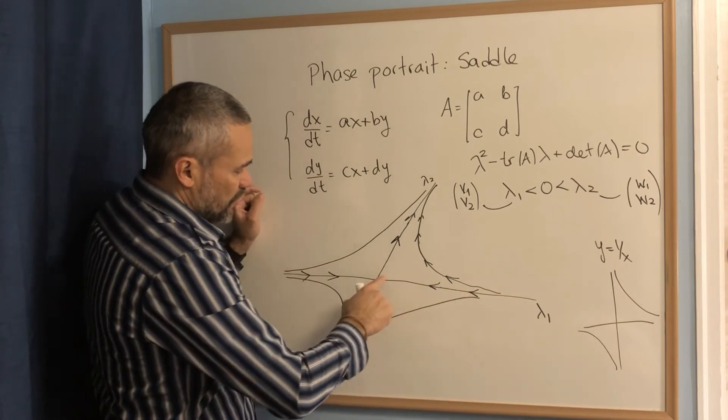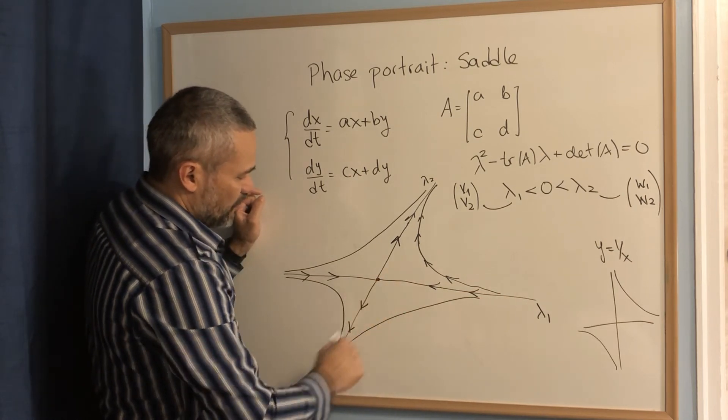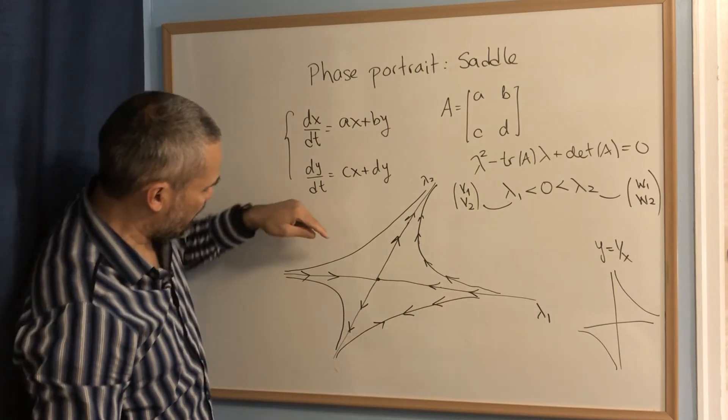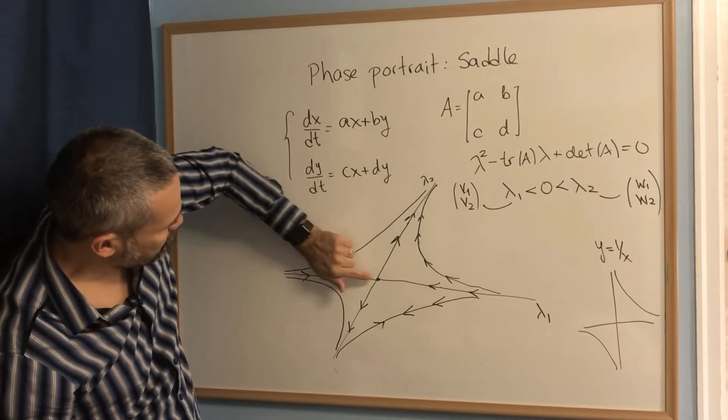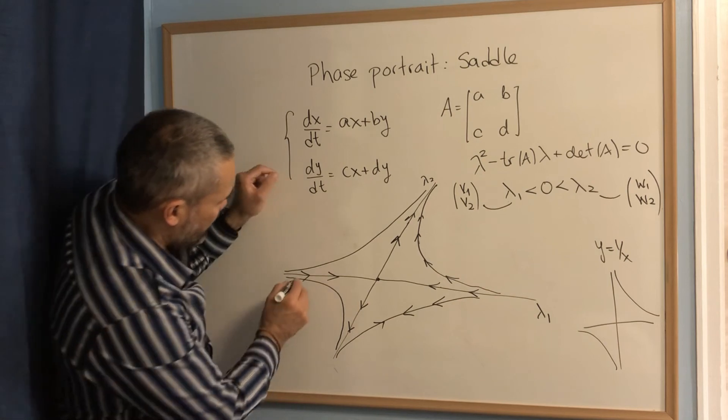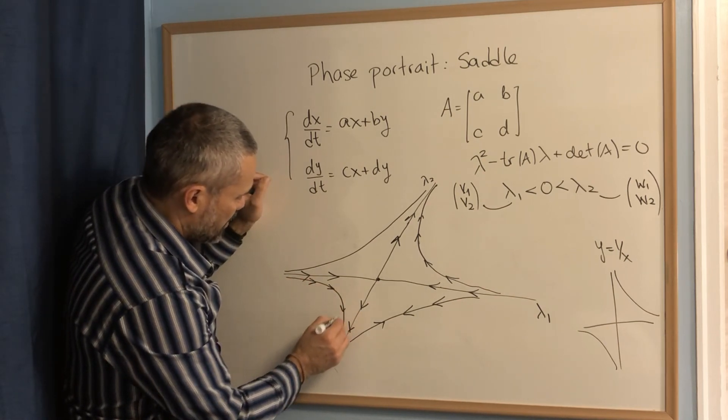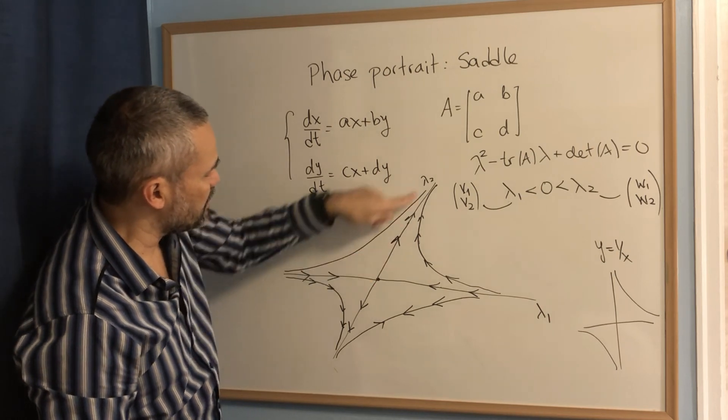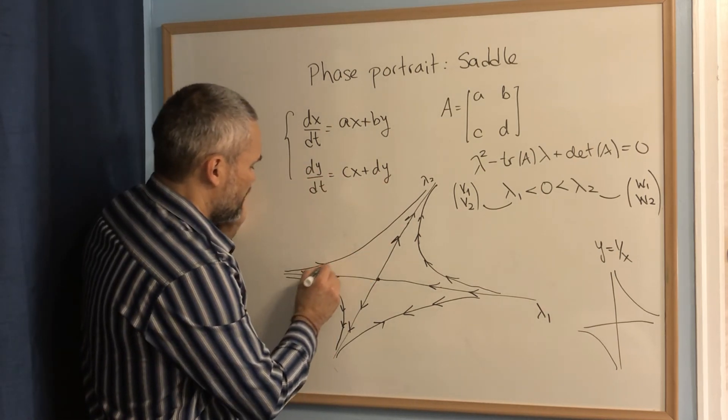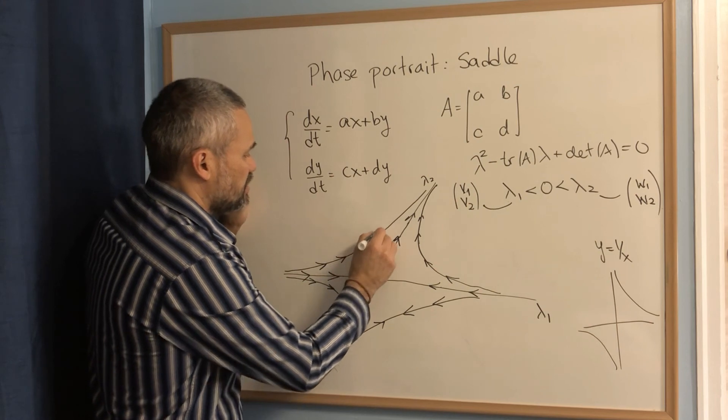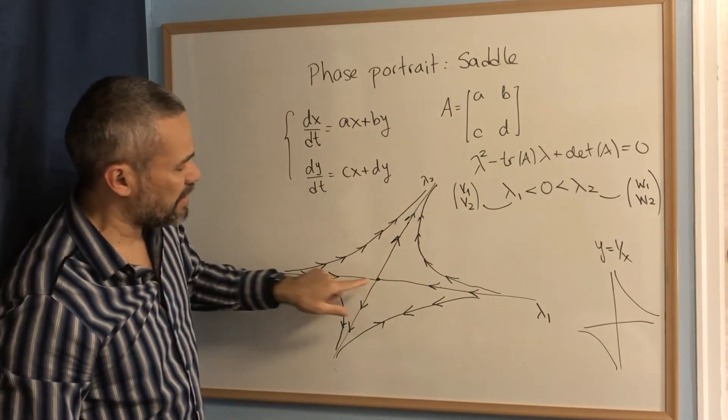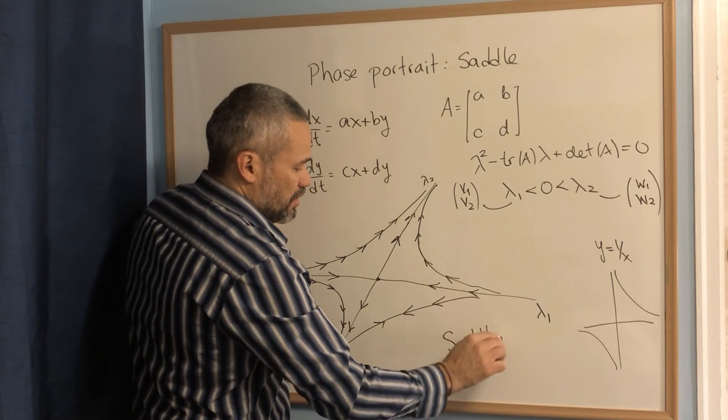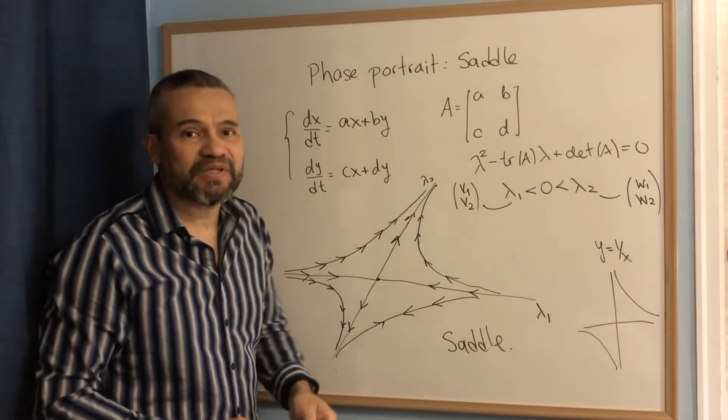In this case, this one goes toward the origin, goes away, then the arrows are like this. Here, these arrows go toward the origin. This one goes away. Then the direction in that orbit is like this. And finally, here, this one goes toward the origin, this one goes away and the direction goes like this. Remember this equilibrium point is called a saddle. Okay, this is it.